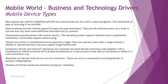Feature phones provide limited support for apps and app installation. They provide internet access via a built-in browser and may have some additional hardware such as a camera. That was the next level where basic phones advanced — models from Nokia, for example, which had a color screen and additional inbuilt games, plus a built-in browser to use GPRS at that time to browse online.